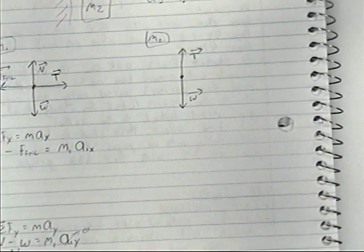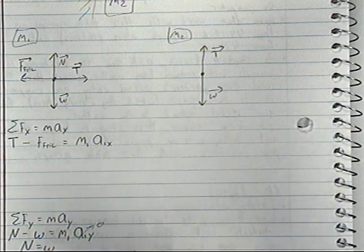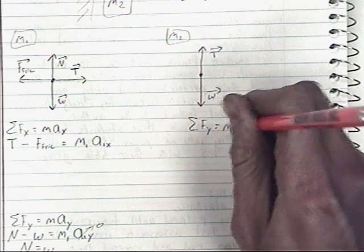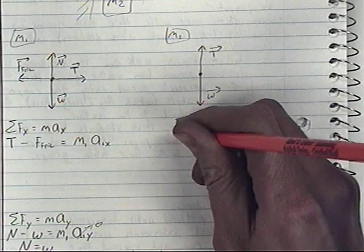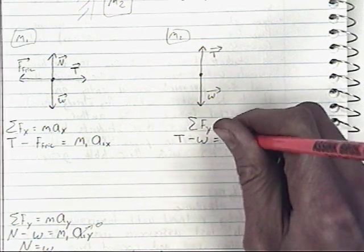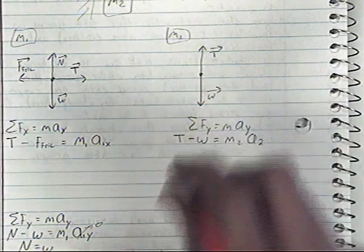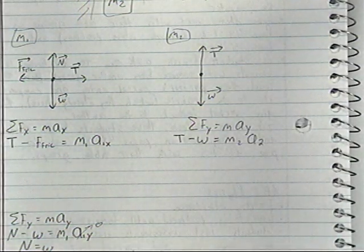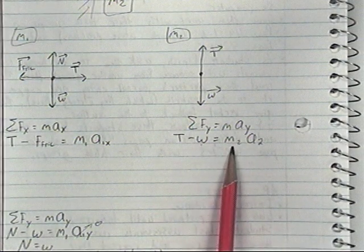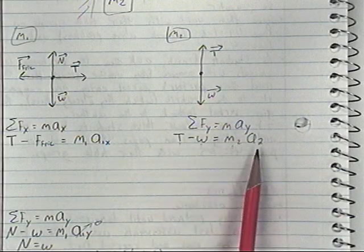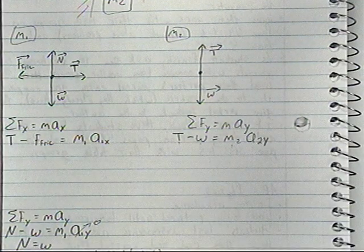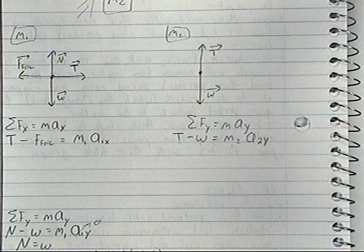For mass two, we only have the y direction — no x direction to worry about. The tension force upward minus the weight force downward equals mass two times acceleration two in the y direction. We can calculate the weight, but tension and acceleration are both unknown.